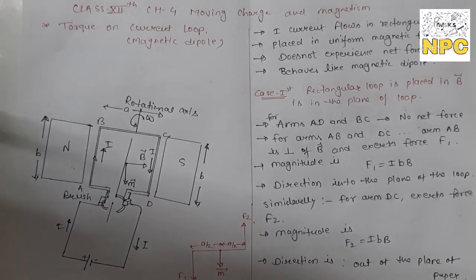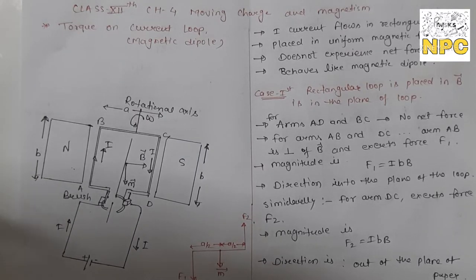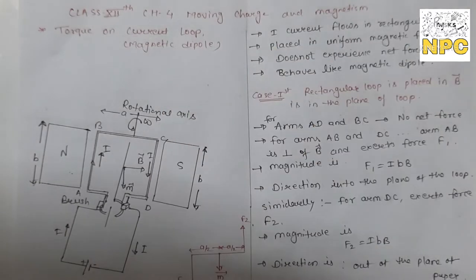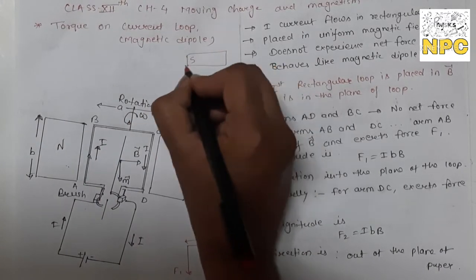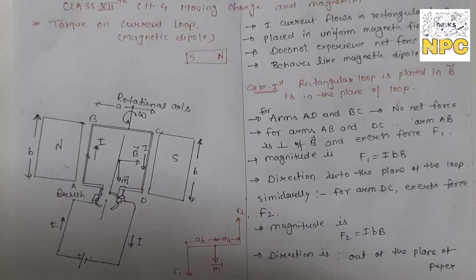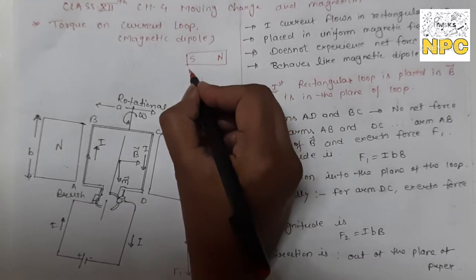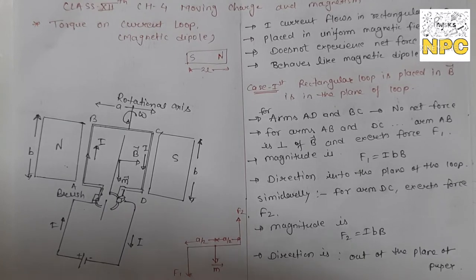This magnetic rectangular loop behaves as a dipole. What is a magnetic dipole? We have studied the electric dipole — in the electric dipole, there are positive and negative charges. In the case of a magnetic dipole, you have a magnet with two poles. These two poles are equal and opposite in direction, and they are separated by a small distance. This situation is called a magnetic dipole.